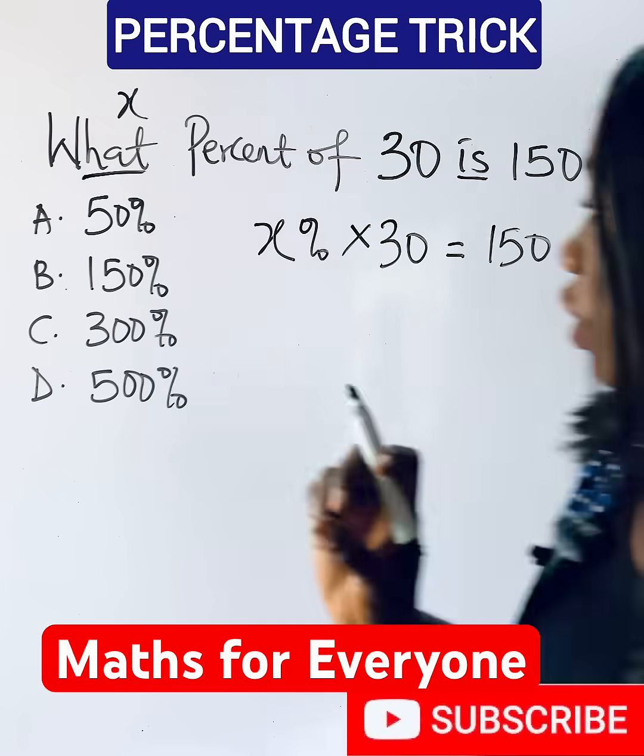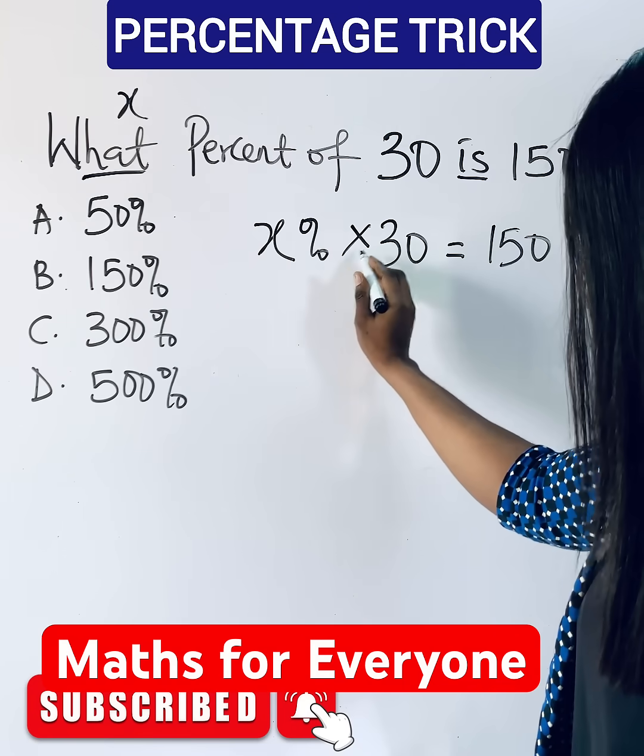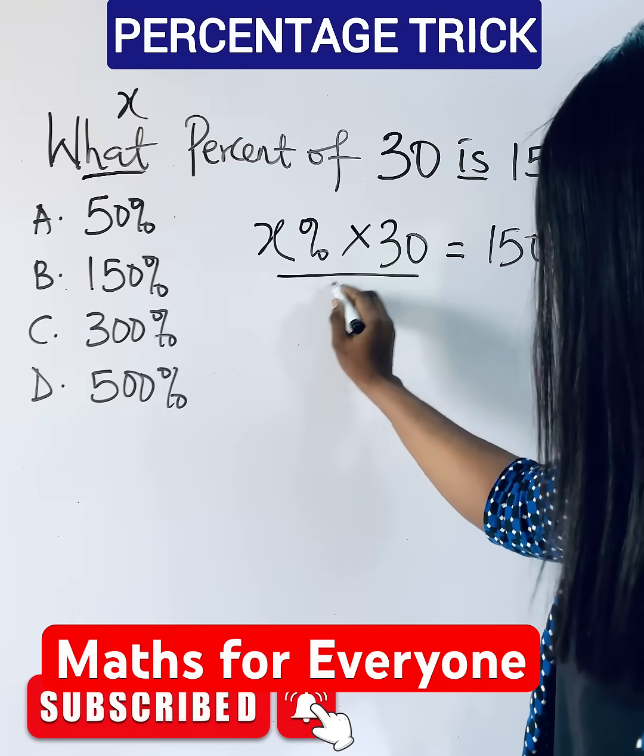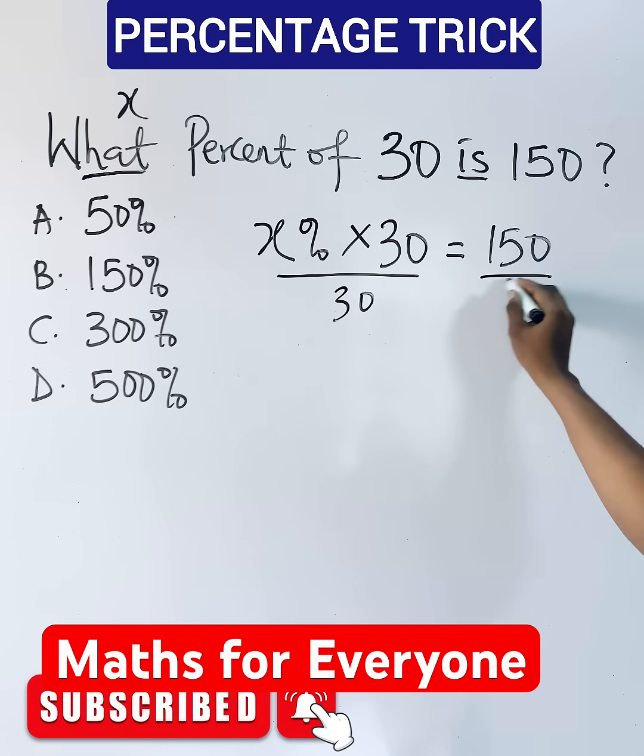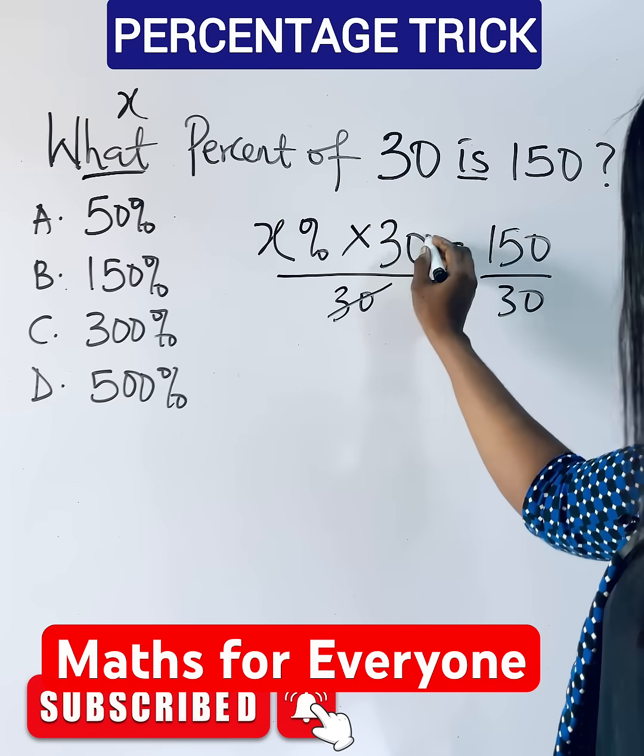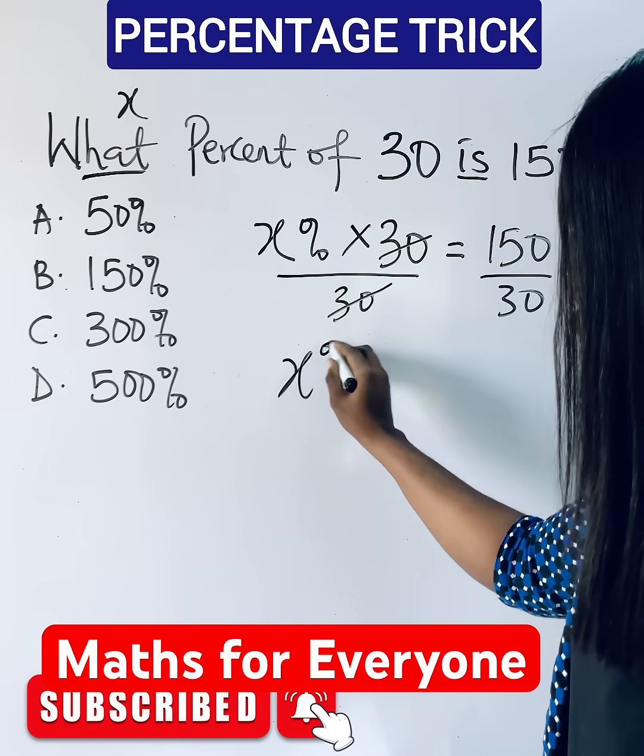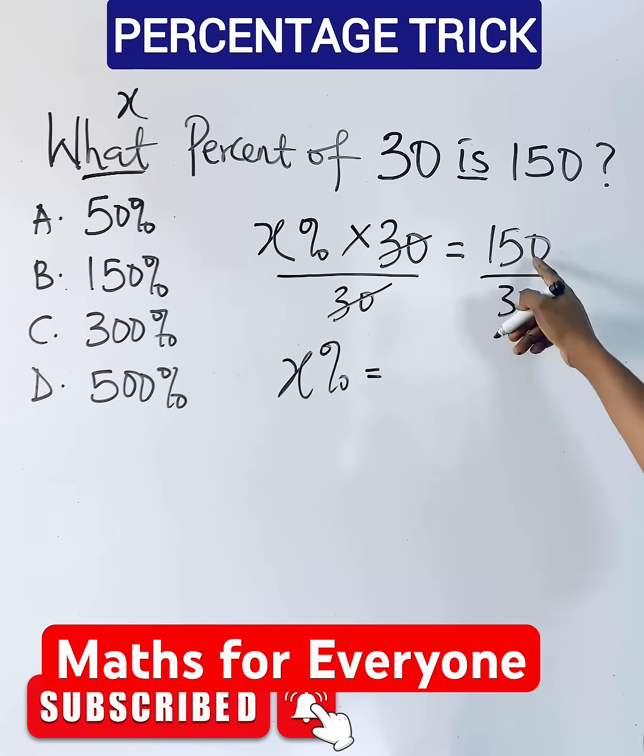So solve. What do you do to get your x? Remember this is multiplication, use division to remove 30. So you do same here and this takes off, so you have x percent is equal to 150